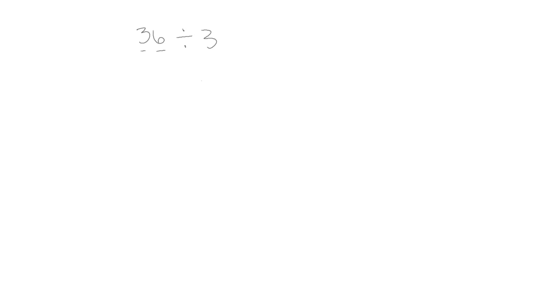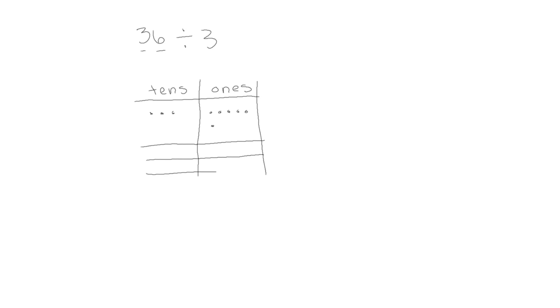Let's try 36 divided by three. Now we have both tens and ones in our dividend, so let's put both tens and ones on our place value chart. We'll show our dividend as three tens and six ones, and we're dividing into three groups. We're going to start with our largest place value, which is the tens. We have three tens, so as we use them we're going to mark them off — one ten in each group.